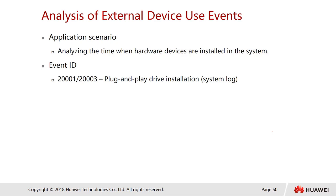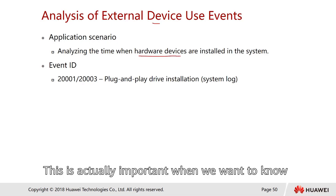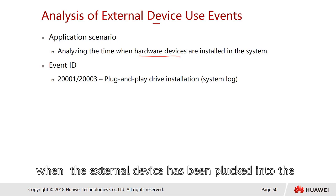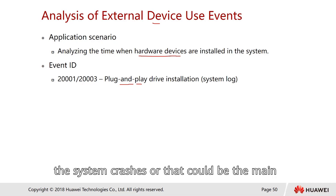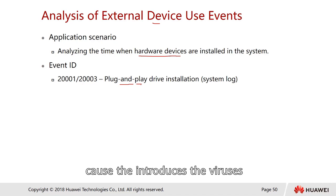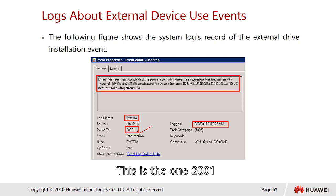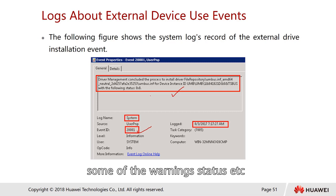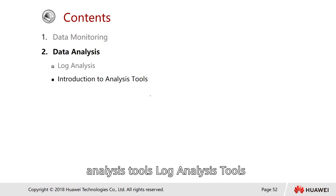We can also analyze external device use events. This is important for knowing when a physical external device was plugged into the system, as that could be the main cause of a system crash or introduction of viruses. The relevant event ID is 20001. We can also review warnings and status entries related to external device connections.